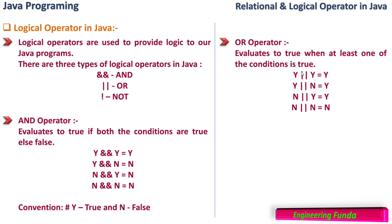The OR operator evaluates to true when at least one condition is true. True OR true is true, true OR false is true, and false OR true is true. AND and OR are binary operators, taking two operands. For AND, both operands must be true to result in true. For OR, if any one operand is true the result is true; OR is only false when both operands are false.